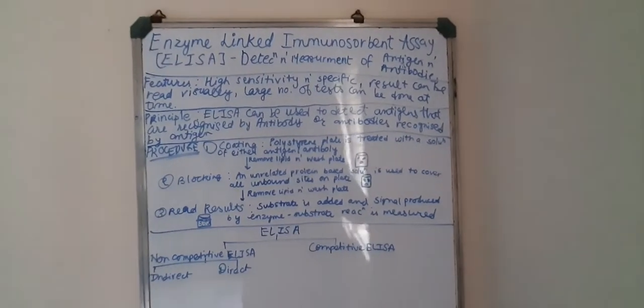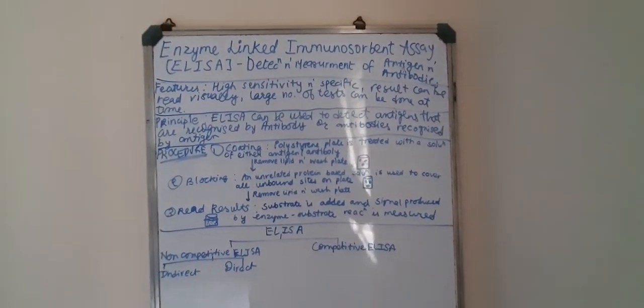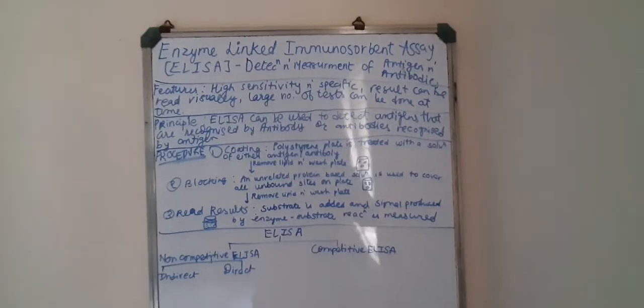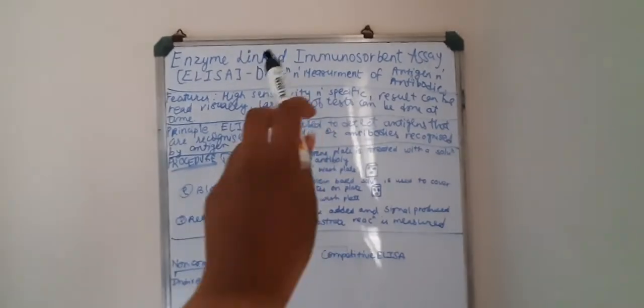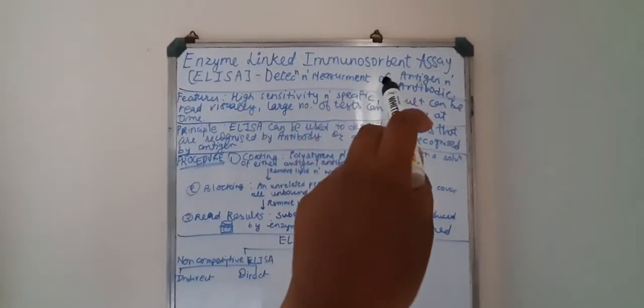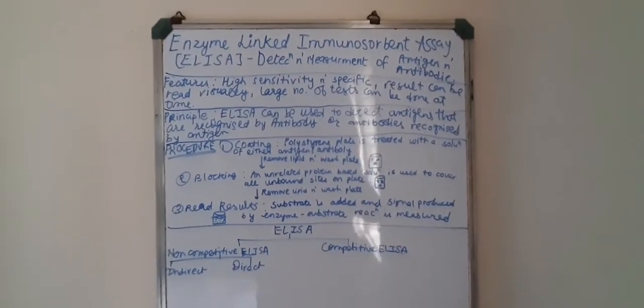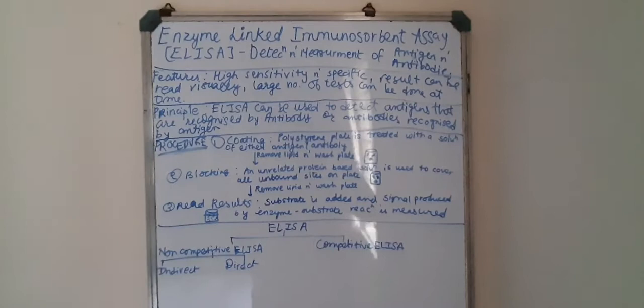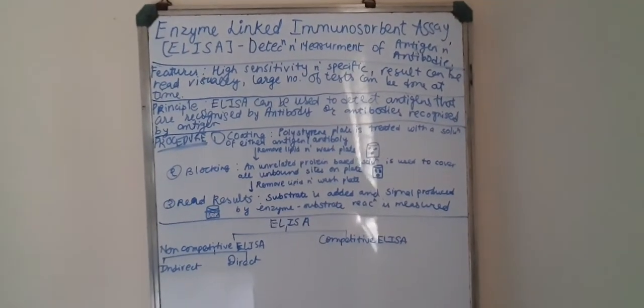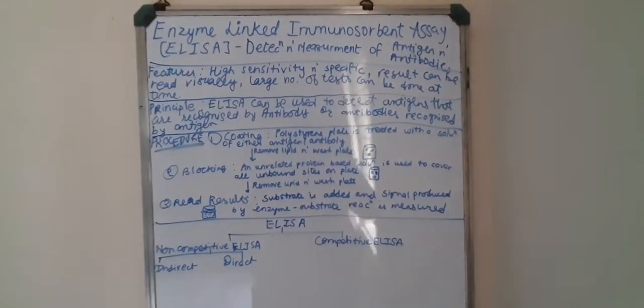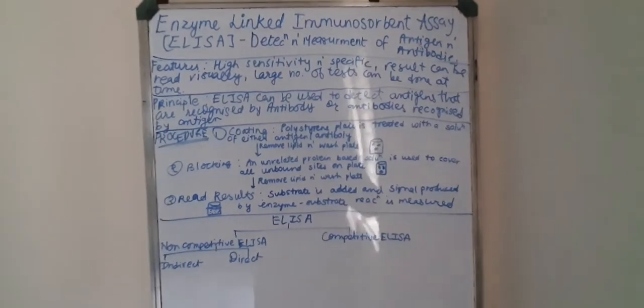In today's video we will learn about ELISA, which is enzyme-linked immunosorbent assay. What is ELISA used for? We use ELISA for the detection and measurement of antigens and antibodies.